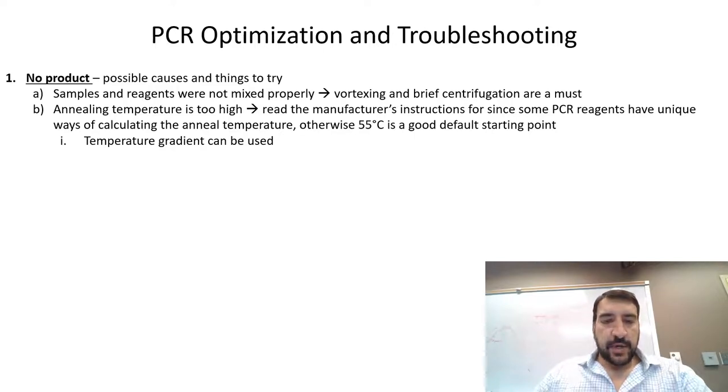If it's available in your lab, you could use a gradient, and if you have a gradient thermocycler, you'll rapidly optimize the optimal annealing temperature.